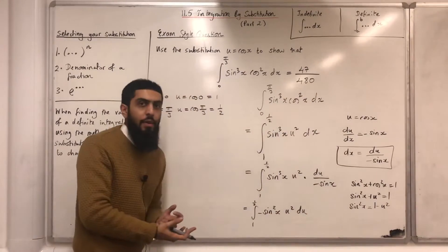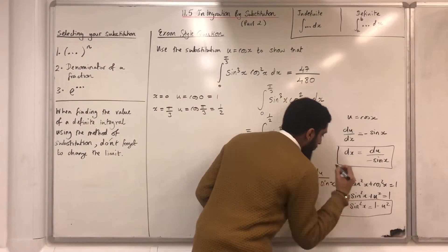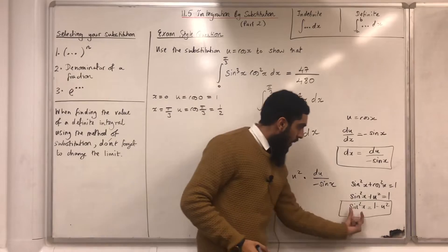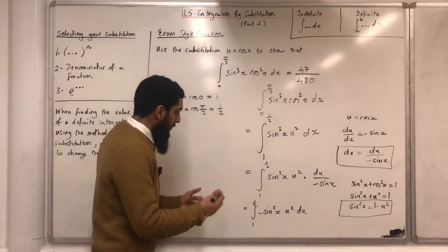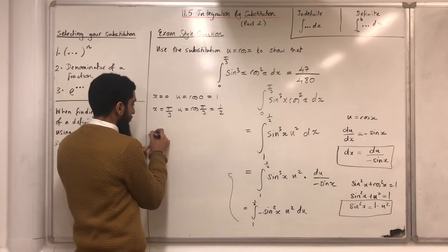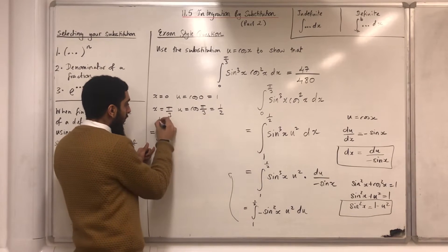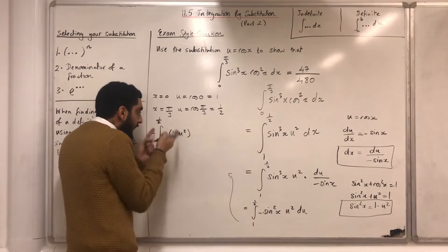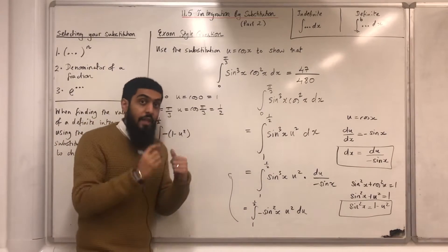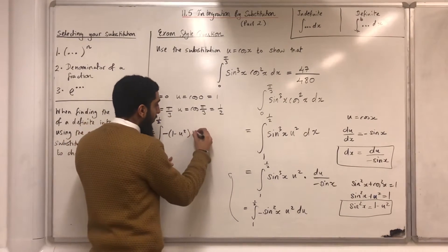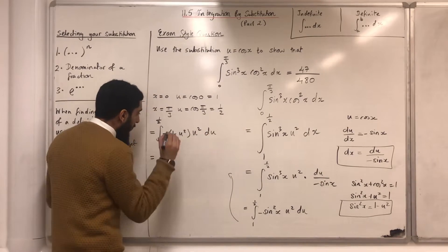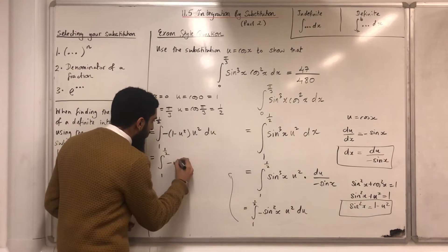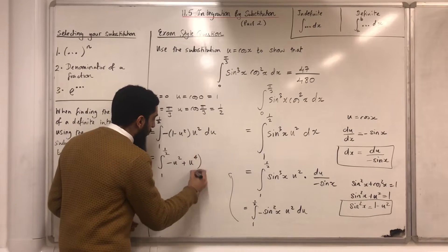I can replace sin²x with (1 − u²) to obtain the integral from 1 to a half of −(1 − u²) · u² du. Don't forget to put the brackets because the minus will affect everything inside. I can then expand this bracket to give the integral from 1 to a half of (−u² + u⁴) du.